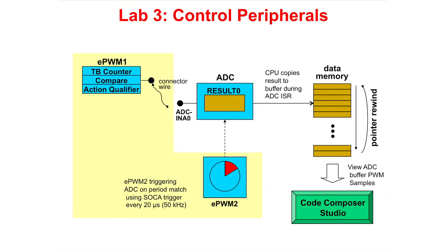In this lab exercise, a 2 kHz 25% duty cycle PWM waveform will be generated by EPWM1. The waveform will be fed into ADC channel A0 using a jumper wire. The ADC is being triggered by EPWM2 at a rate of 50 kHz. After each conversion, the CPU will copy the results into a circular buffer. Using Code Composer Studio, we will view the waveform in the time domain and frequency domain, and experiment with the real-time emulation features.